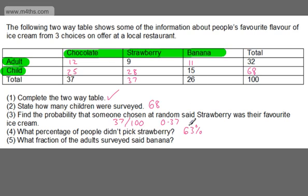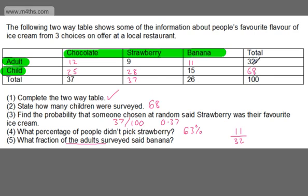In the fifth question, we're asked what fraction of the adults surveyed said banana. There were 32 adults surveyed and 11 said banana, so it's 11 over 32. We can't simplify that any further. A common mistake in this type of question is people choosing 11 over 100 — but it's asking what fraction of the adults, and there are 32 adults, so 11 of 32 said banana.